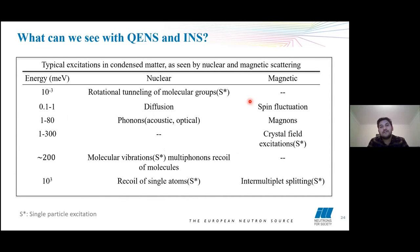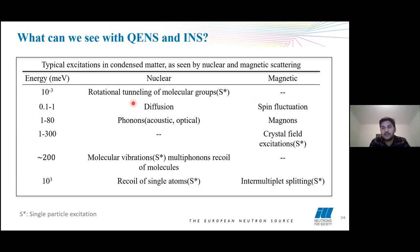What can we see with quasi-elastic or inelastic scattering? From 0.1 to 1 milli-electron-volt, we can study diffusion of particles in nuclear scattering and spin fluctuations in magnetic scattering. From 1 to 80 milli-electron-volt, we can study phonons — lattice vibrations — and in magnetic scattering we can learn about magnons, which are analogous to phonons. So what we can study depends on the energy range being used.